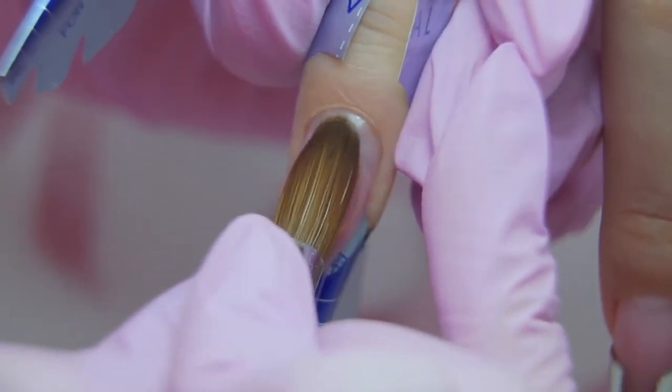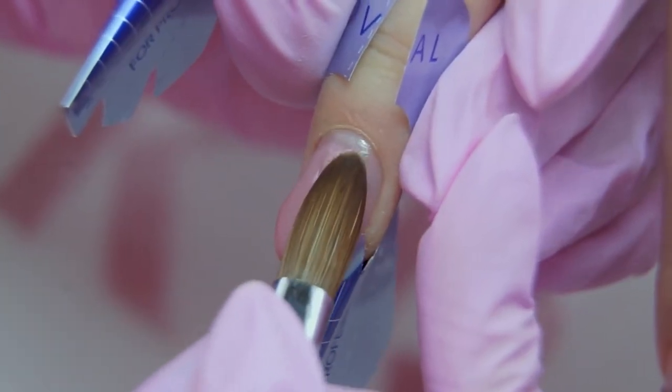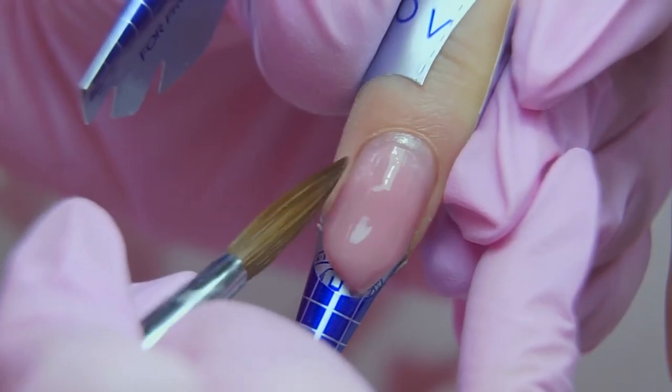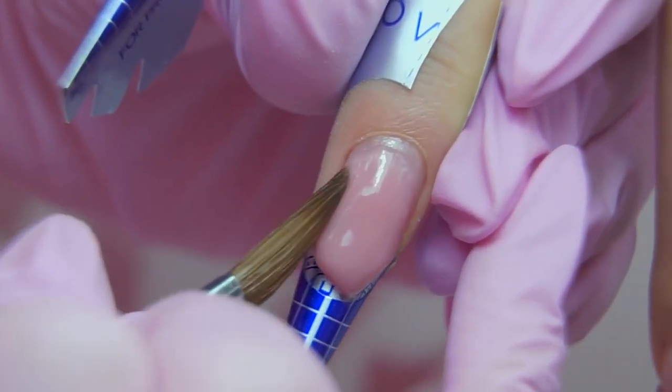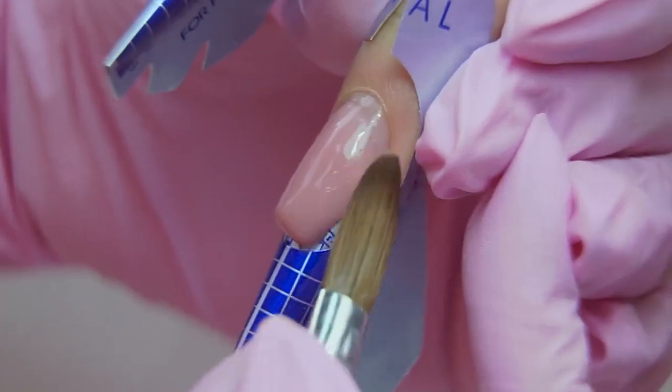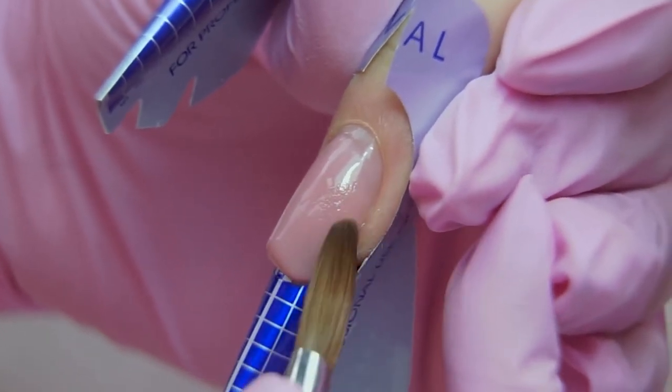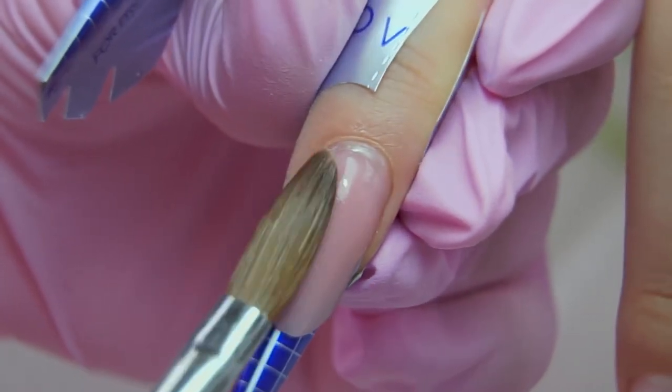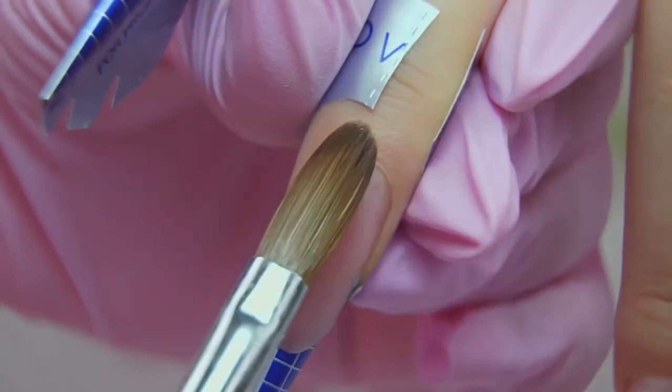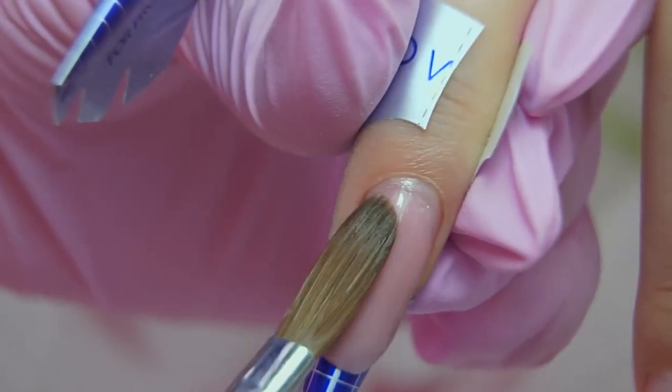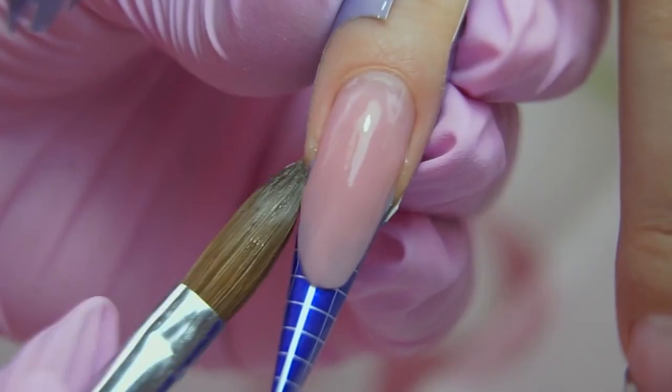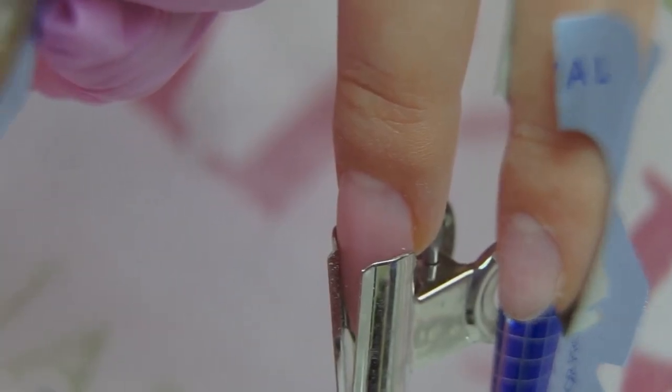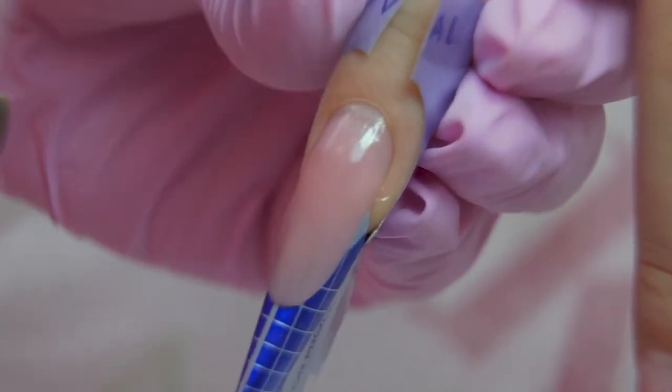I bring the material to the white lunula, but don't cover it. This way the nail growth will look as natural as possible. I have formed the underlays on two nails and now cure them in the lamp.